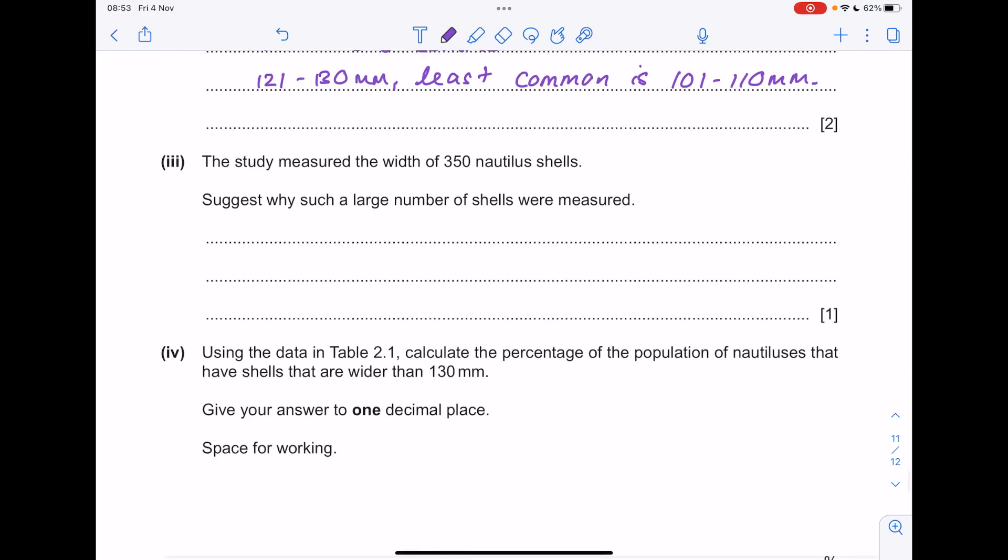The study measured the width of 350 shells. Suggest why such a large number of shells are measured. You always want a very large sample size in order to avoid bias or skewed results.